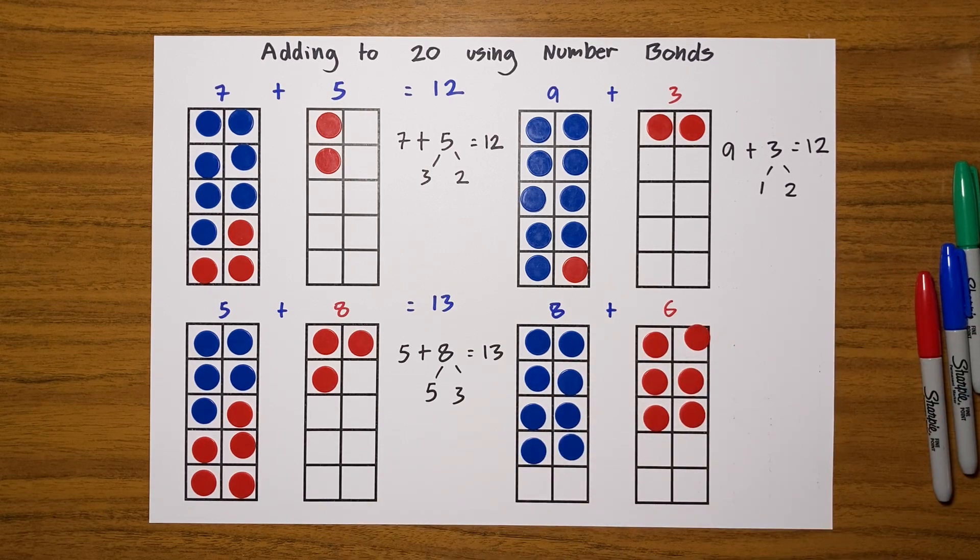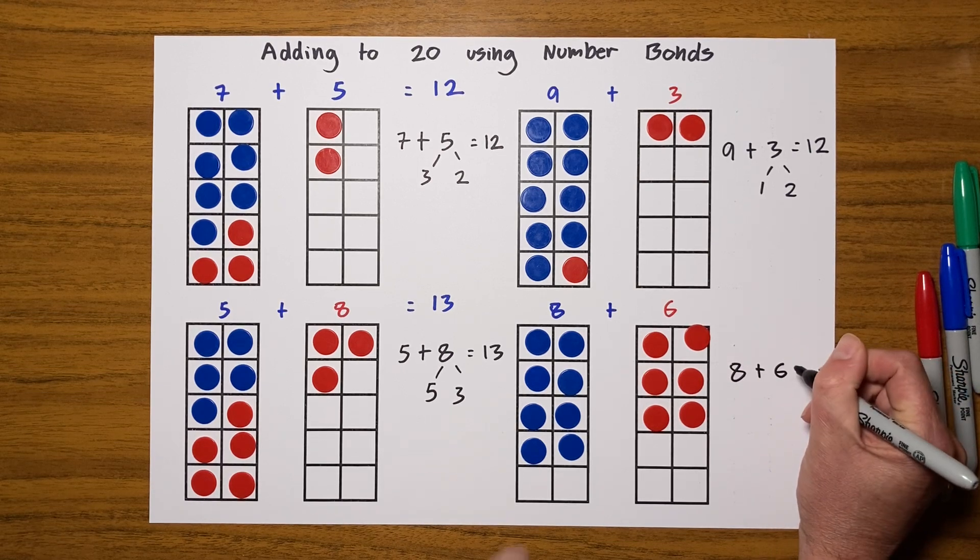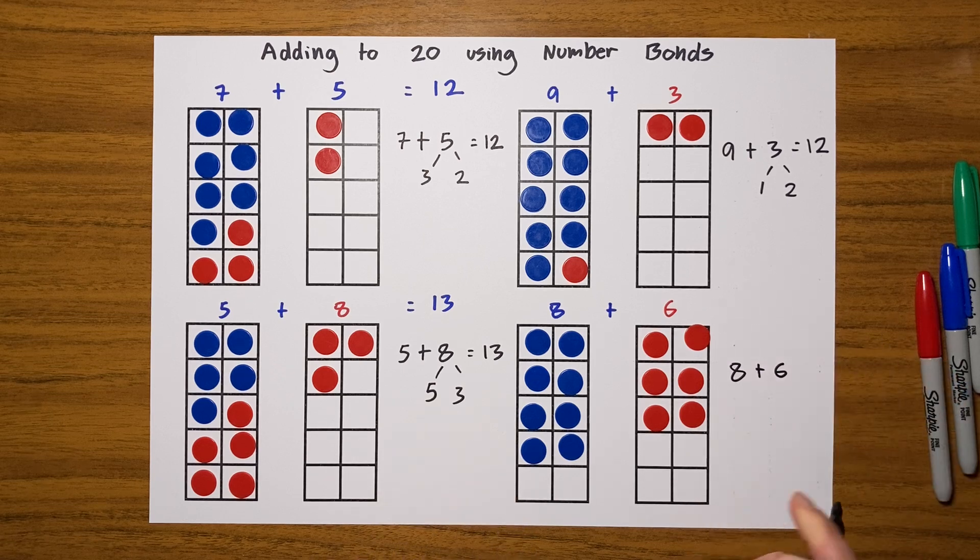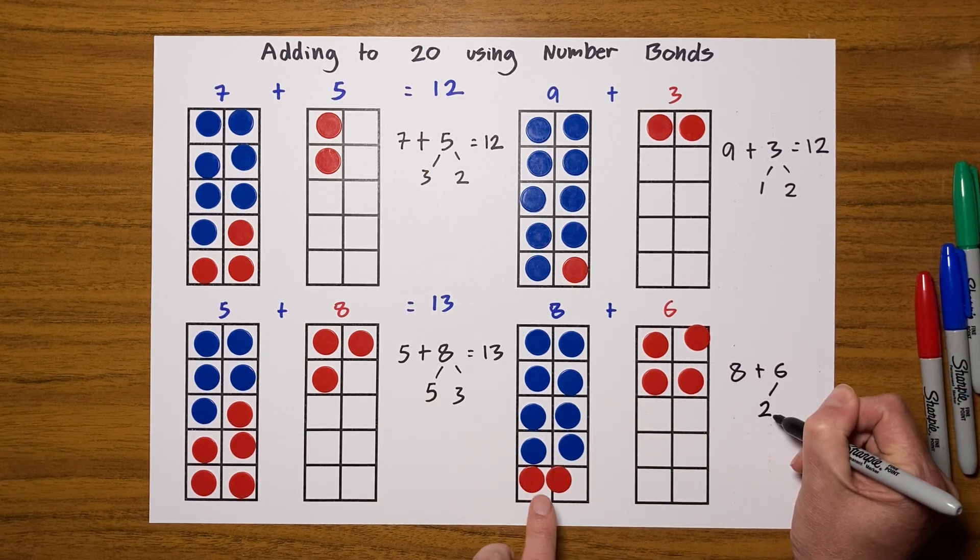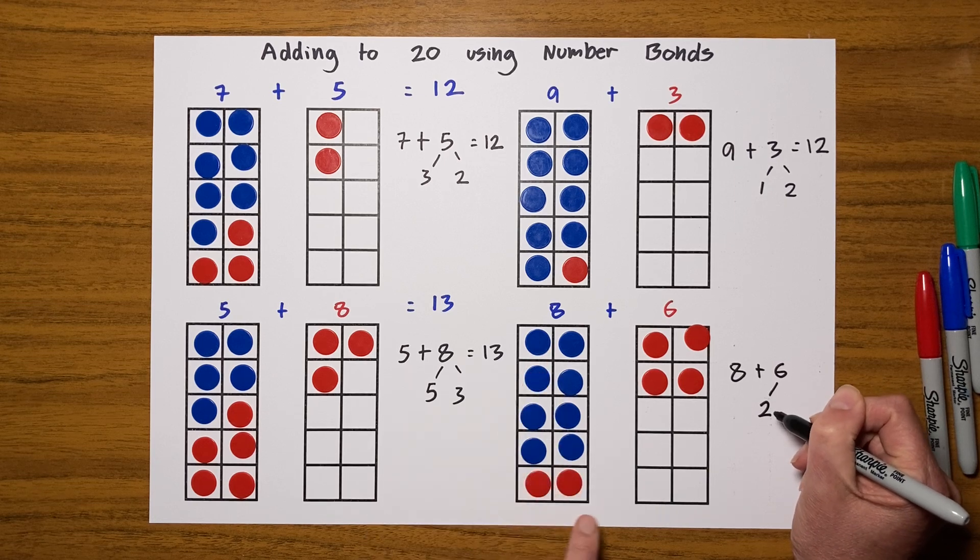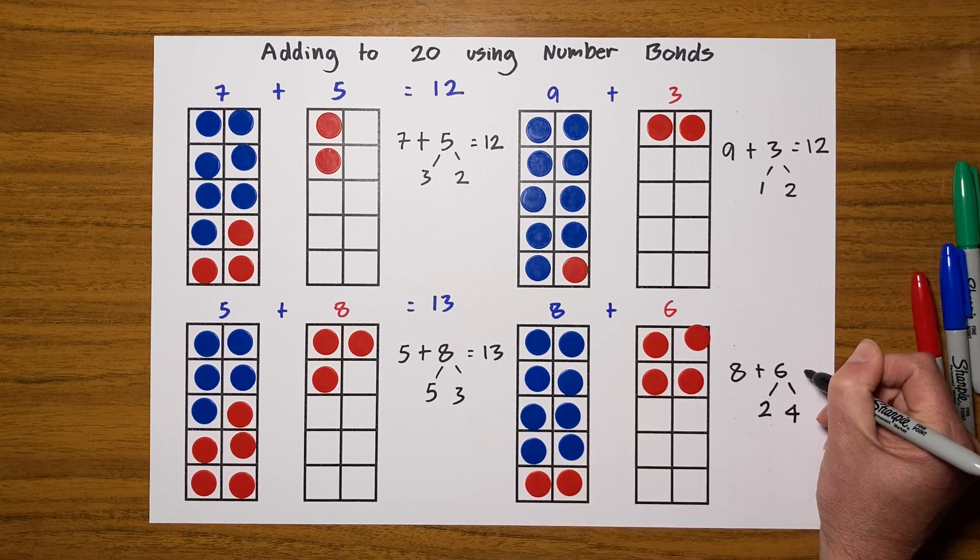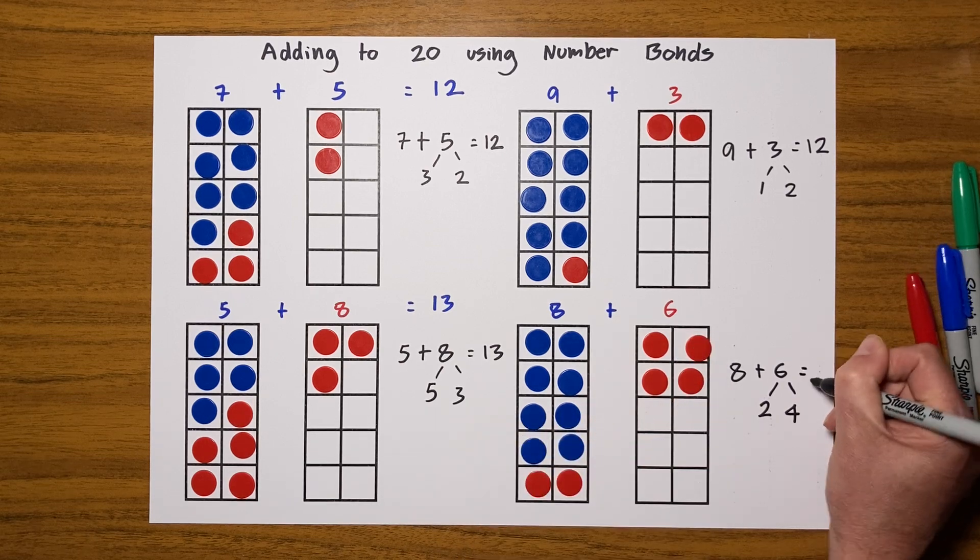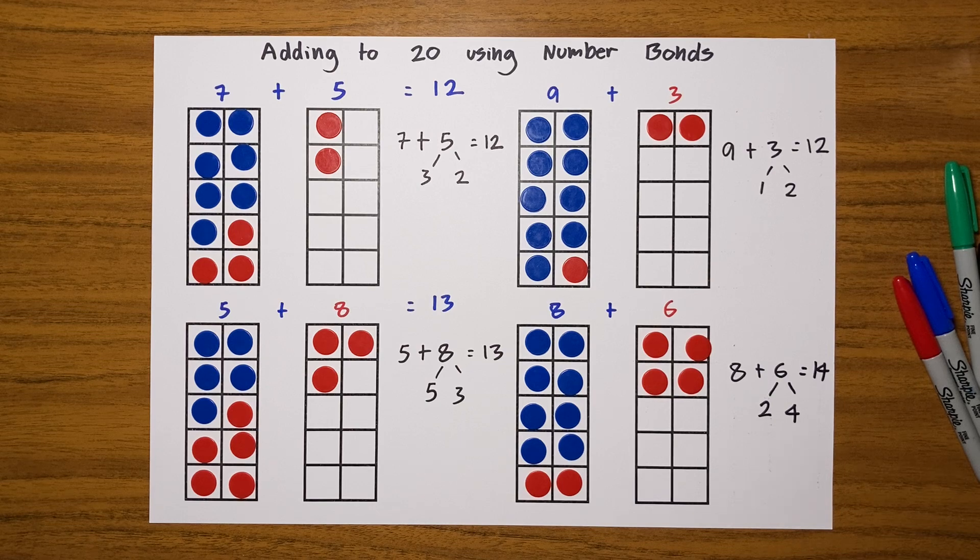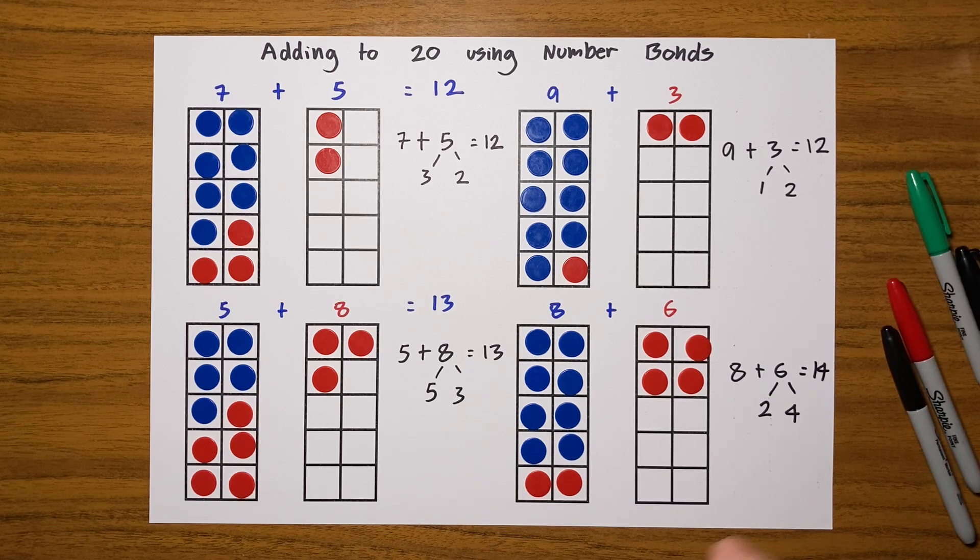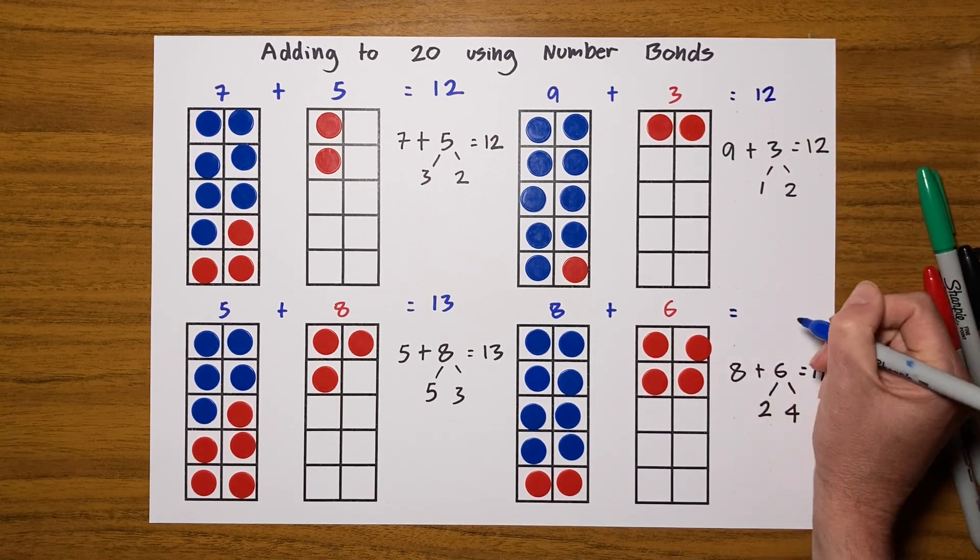So I'll write this out now. So I've got 8 plus 6. Well, I want to make that 8 up to 10, so I'll take 2 away from that 6 to make 10. There are 4 left, and that is going to give me an answer of 14. And let's leave it looking really neat and tidy by just adding those answers in there.